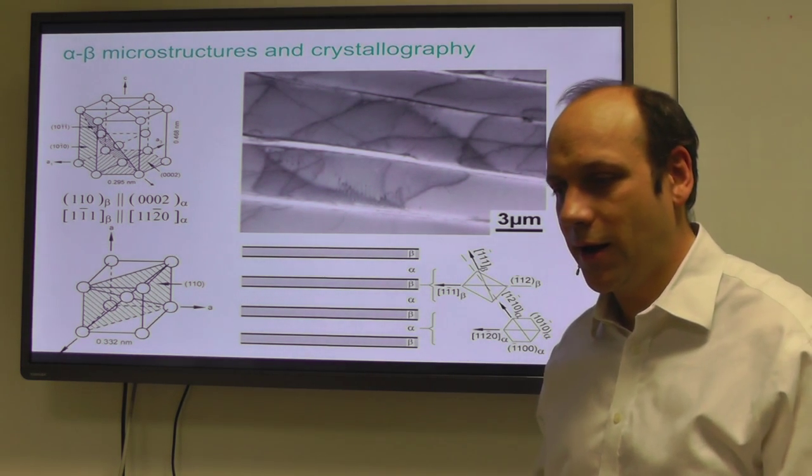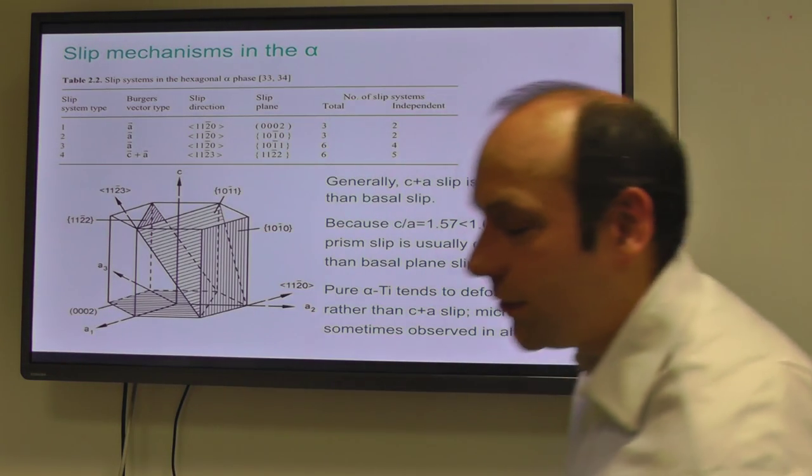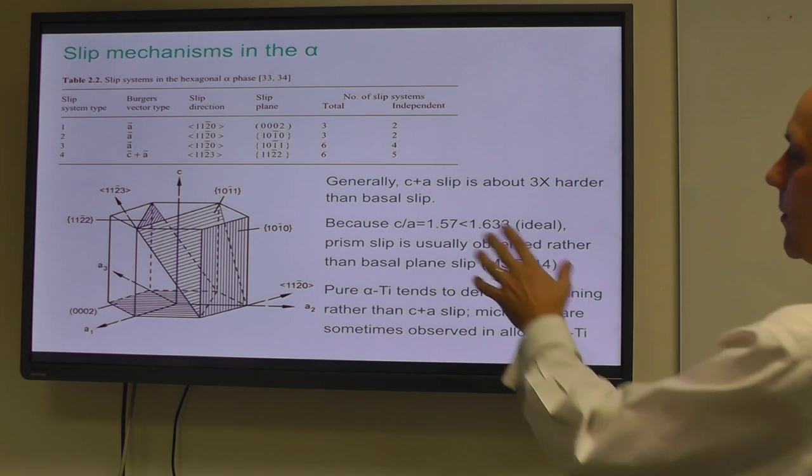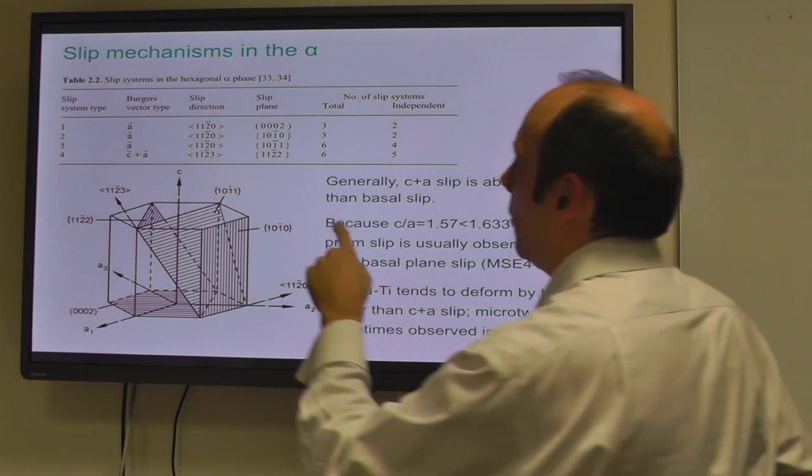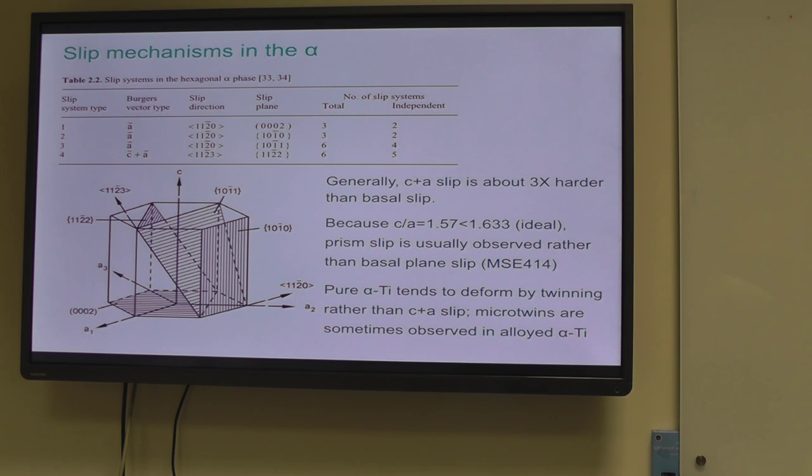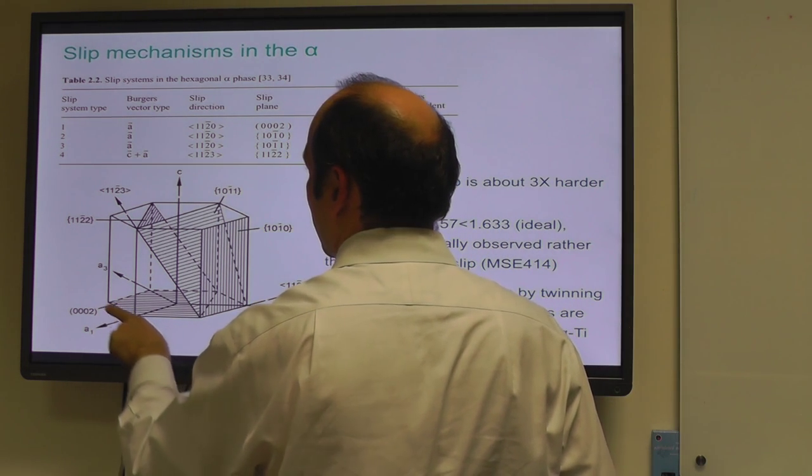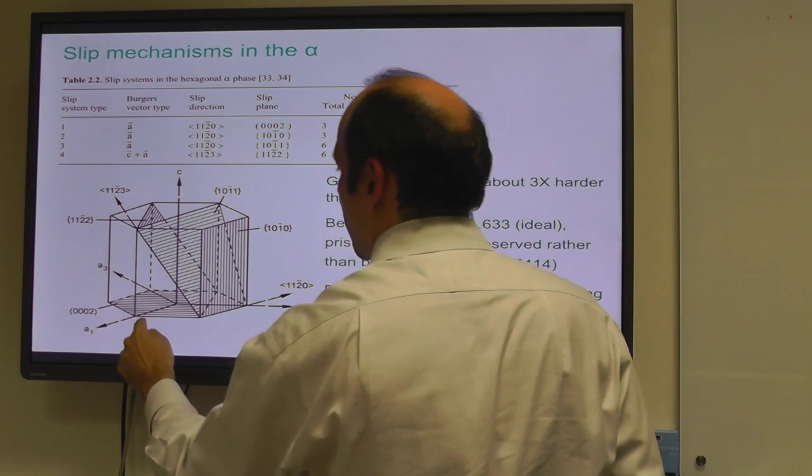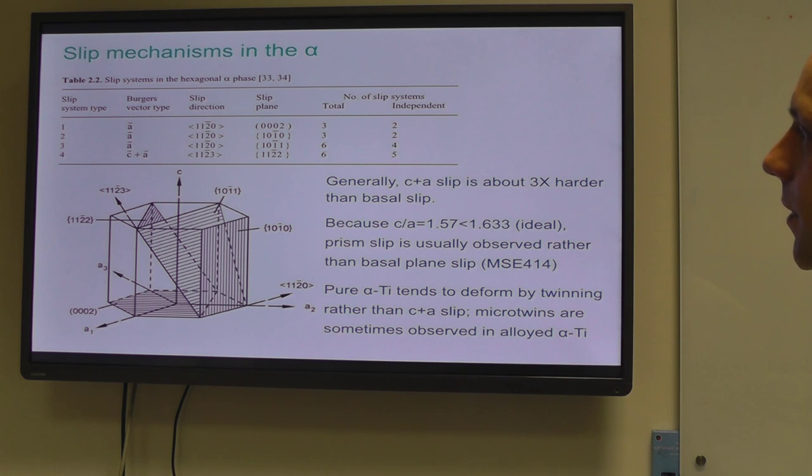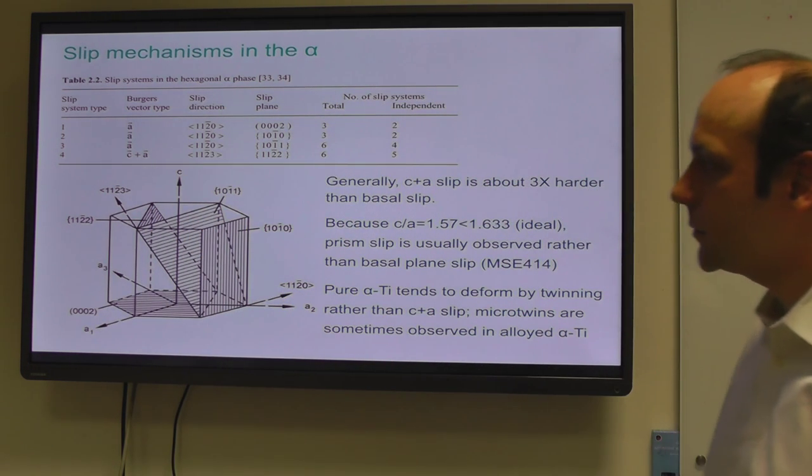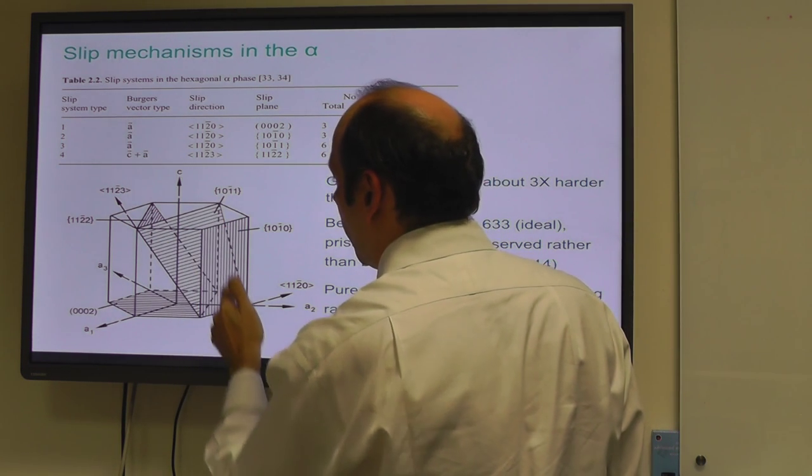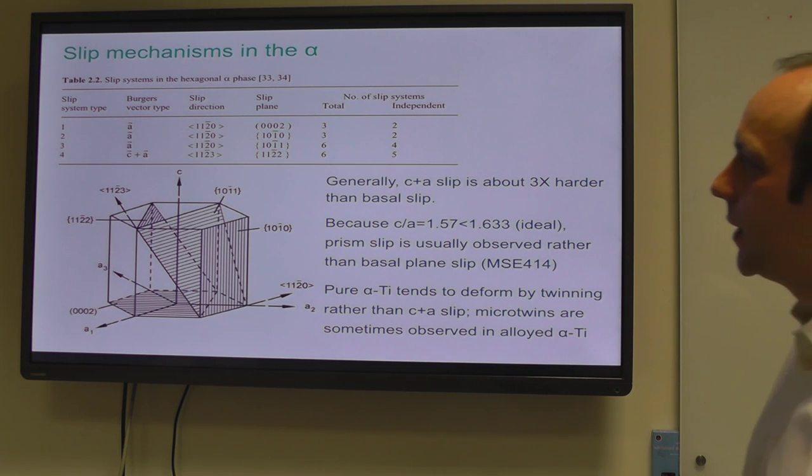Then when we come to deform it, we find that generally C plus A slip is about three times harder than basal slip, or A slip I should say, prism or basal. Here are the possible slip systems in hexagonal titanium from Lutjering-Williams. If you take this A slip direction, 11-20 types, those directions in the hexagonal prism, there are three possible slip planes that can go on: either the basal plane 0002, you can also go on this 10-10 prism plane, the sides of the hexagonal prism, there's six of those, and you can also go on this 10-11 plane. But the one that you tend to see deform on is this prism slip here, 10-10, that's the commonest one you see deformation on.